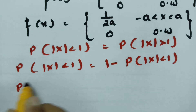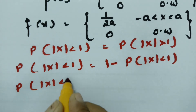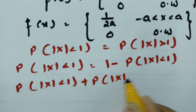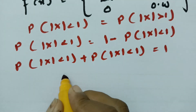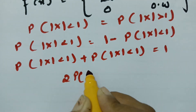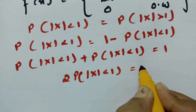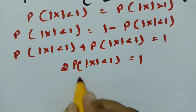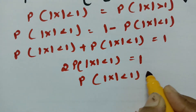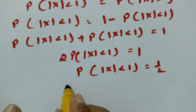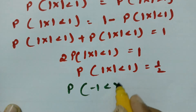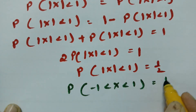Sending terms to the other side: P(|x| < 1) + P(|x| < 1) = 1, so 2 × P(|x| < 1) = 1, therefore P(|x| < 1) = 1/2. And |x| < 1 means x lies between -1 and +1.